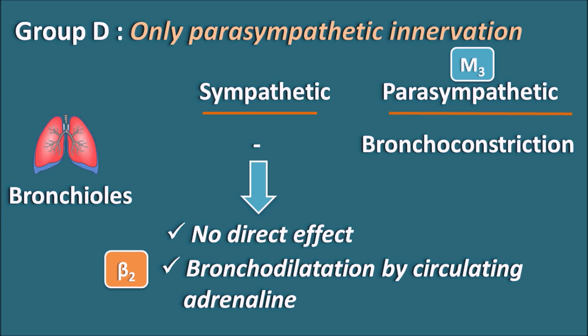Even with no direct nerve supply to the bronchioles, they can still be dilated by circulating adrenaline. This makes bronchioles one of the organs in Group D, where there is no sympathetic innervation but only parasympathetic innervation is present. By dividing the functions of the ANS into four groups, we can easily understand at which target organs both divisions have nerve supply working in opposite directions, at which organs both work similarly, and at which organs only one division is working. Only sympathetic innervation is present at organs like the liver, kidney, adrenal medulla, and blood vessels, while parasympathetic innervation is mainly present at the bronchioles.